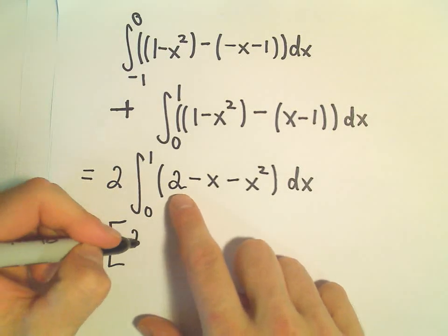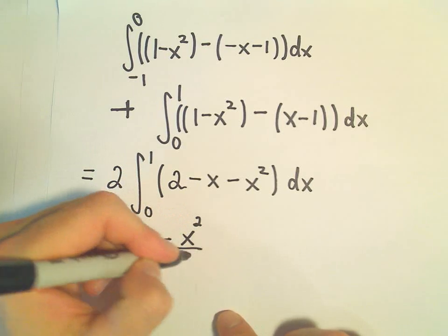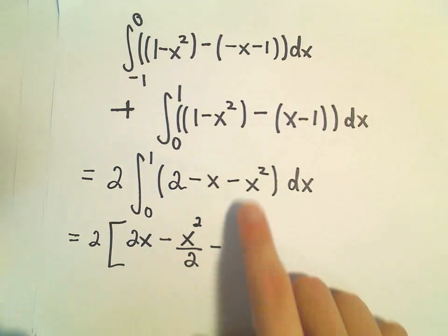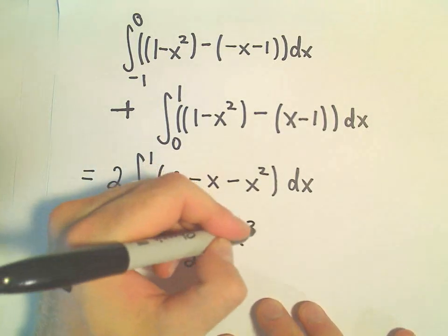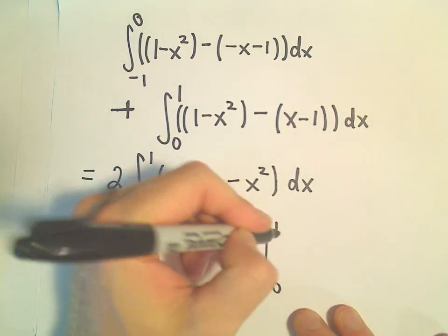All right, so the antiderivative of 2 is just 2x. The antiderivative of x will be x squared over 2. And then the antiderivative of x squared will be x cubed over 3. Again, we're going to evaluate all of this from 0 to 1.